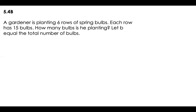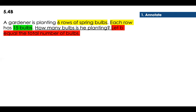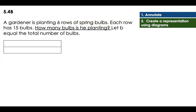I'm going to read this problem first. A gardener is planting six rows of spring bulbs, and each row has 15 bulbs. How many bulbs is he planting? Let B equal the total number of bulbs. So the unknown letter here is B. Now let's annotate: we have the parts — six rows — then we have 15 bulbs in each of those parts. How many bulbs is he planting? B is the total number of bulbs, so that's my total.